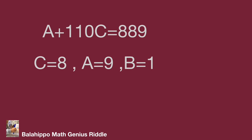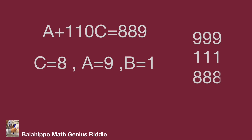Now check our answer: AAA equals 999, BBB equals 111, and CCC equals 888. The sum of these numbers gives 1998, which matches BAAC. It is the correct answer. Do you find it? I hope you enjoyed the video. Thank you.